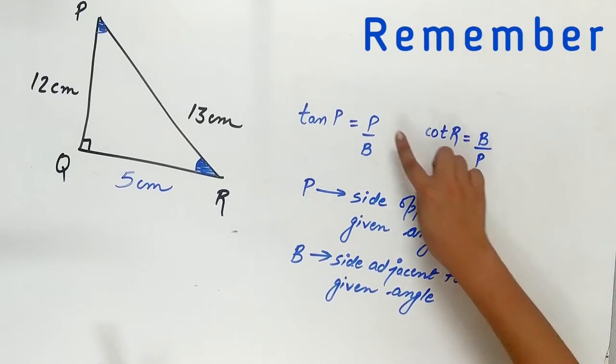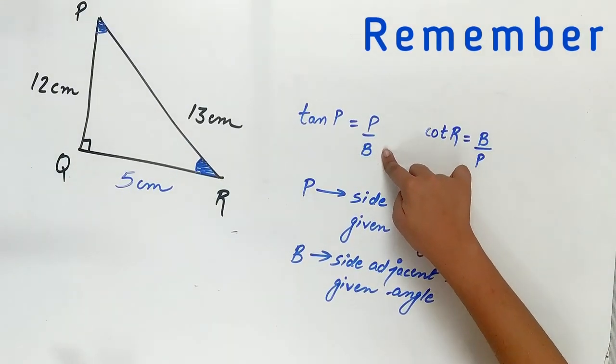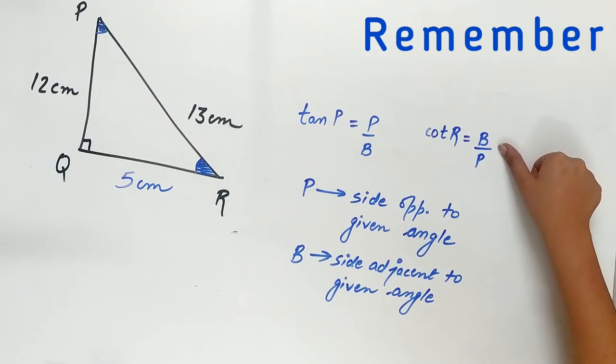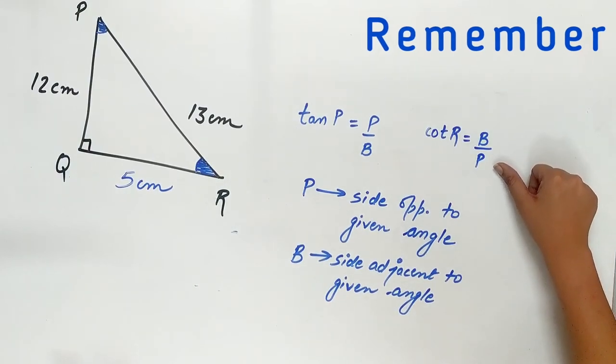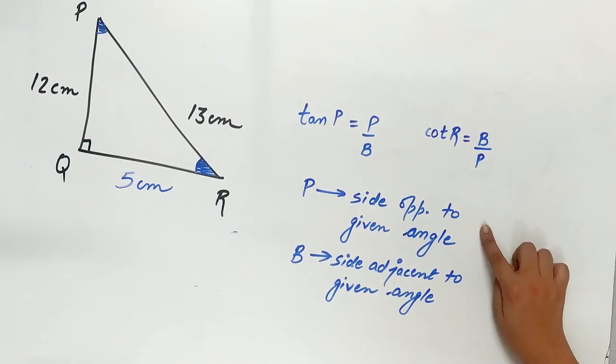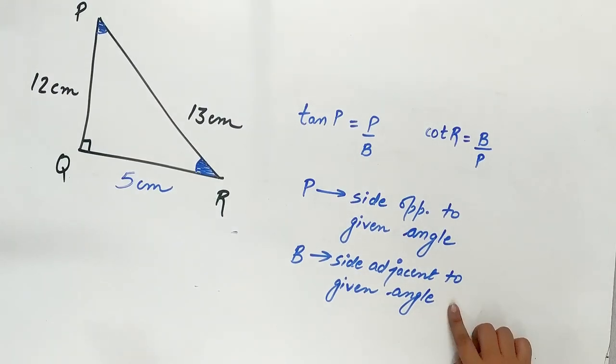Remember, tan P equals perpendicular upon base, and cot equals base upon perpendicular. Perpendicular is the side opposite to given angle, and base is the side adjacent to given angle.